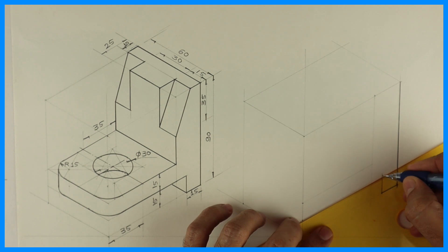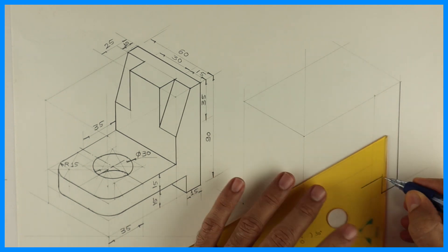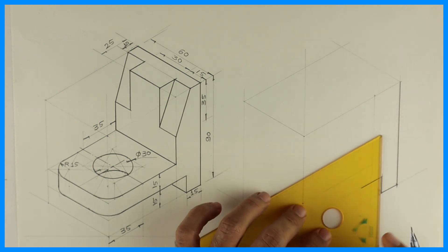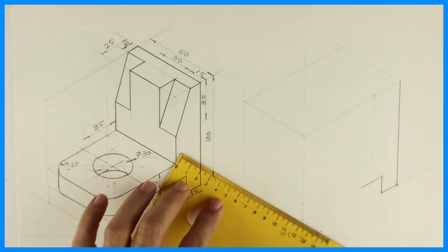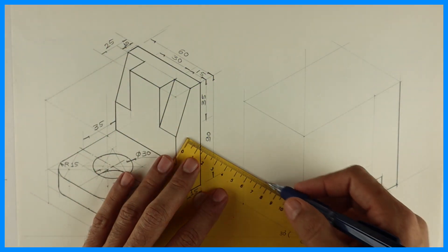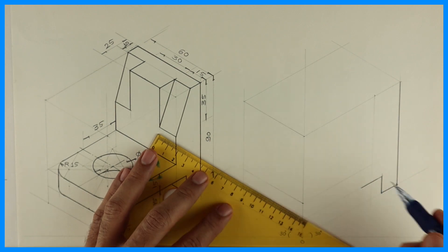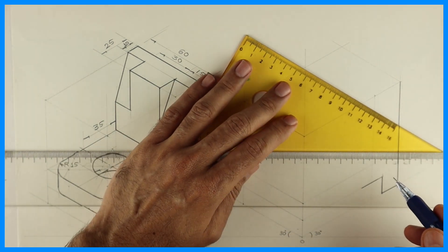So we will get this front portion. See this. Now the same portion will be behind. How much behind? 60. So we will take all these points behind by 60.